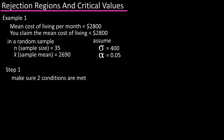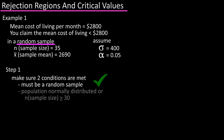Step one: make sure two conditions are met. First, the sample must be a random sample — and it is, as stated in the information given. Second, the population must be normally distributed, or n, the sample size, must be greater than or equal to 30. Our sample size is 35, so that condition is met.